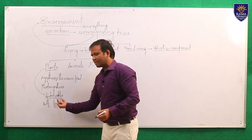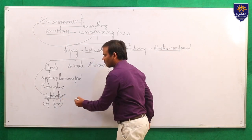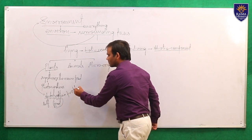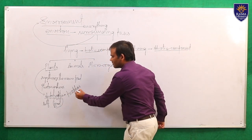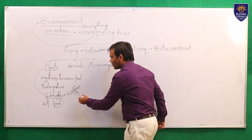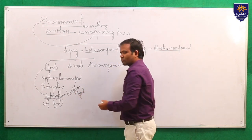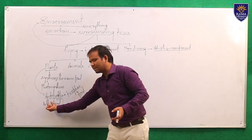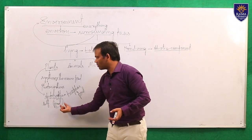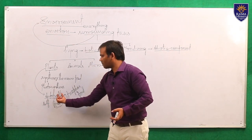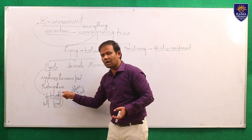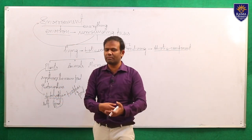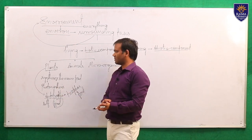The term 'trophos' is originated from a Greek word meaning food. So the organism which makes its own food by itself is known as an autotroph. The plants are also known as autotrophs because they synthesize their own food with the help of photosynthesis.